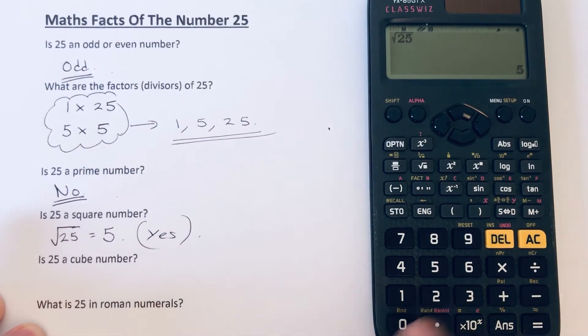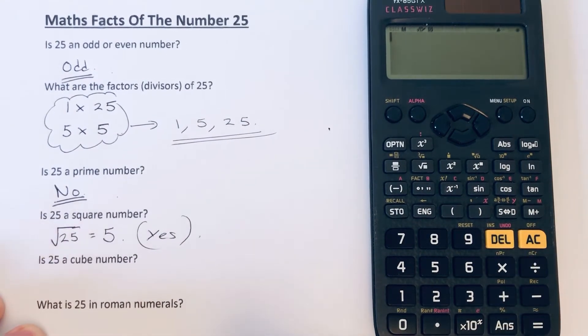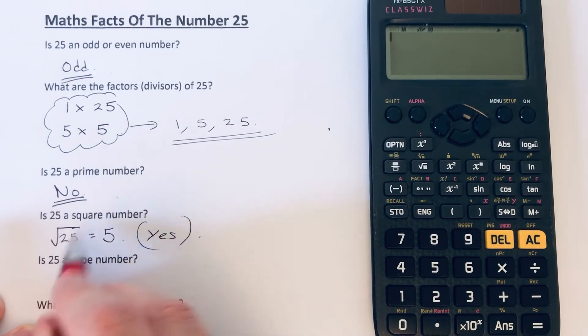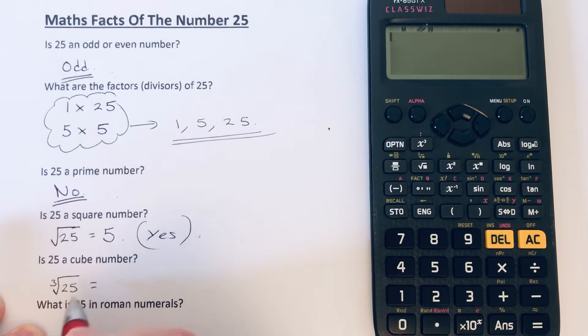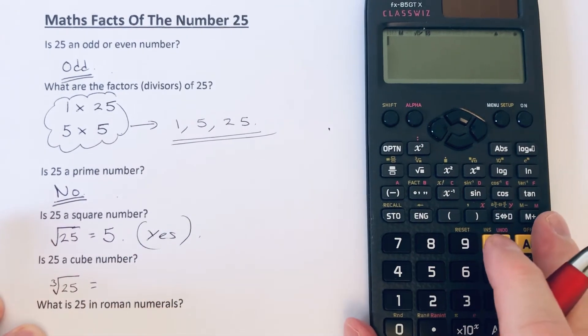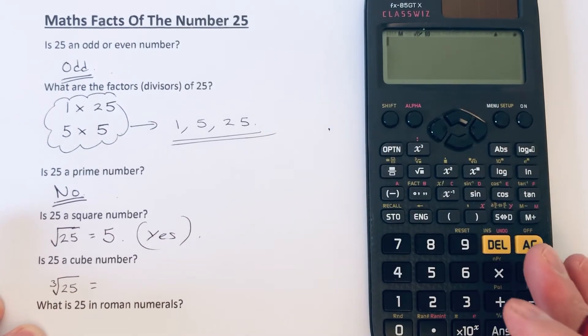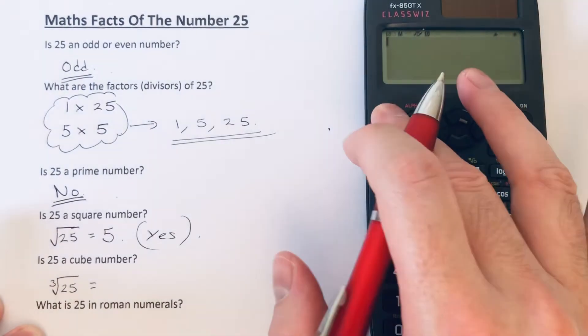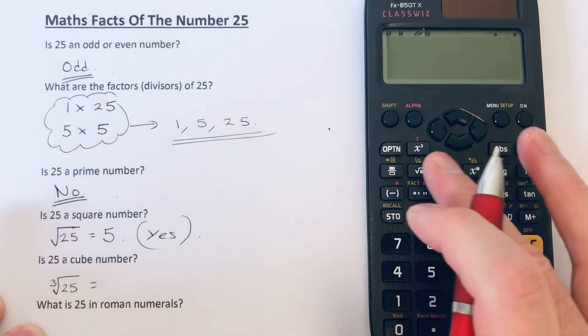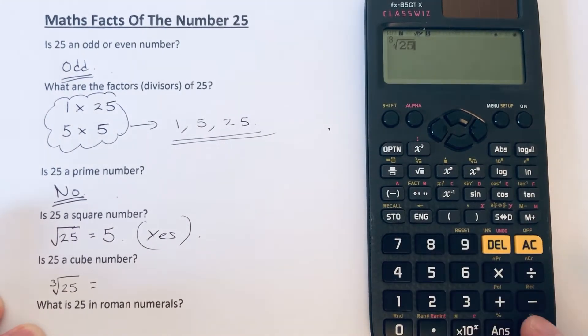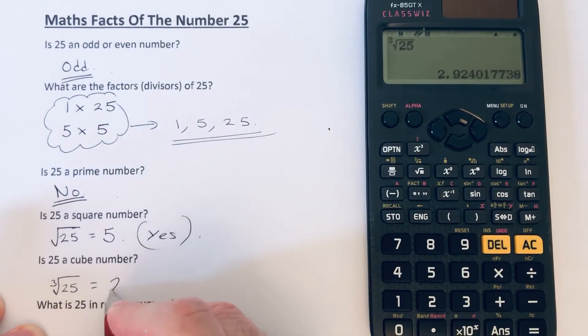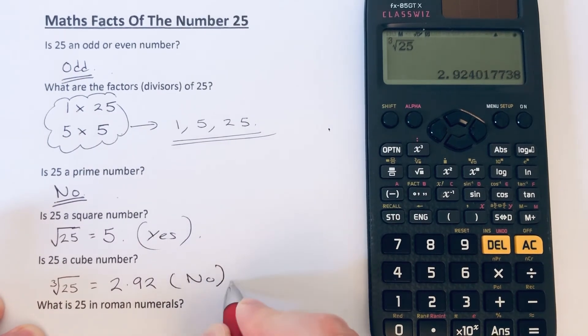Is 25 a cube number? Well, similar to a square number, we should be able to cube root 25. Again, if it comes out as a whole number, it would be a cube number. So if we go shift, cube root, 25... it's come out as a decimal, so the answer to this is no.